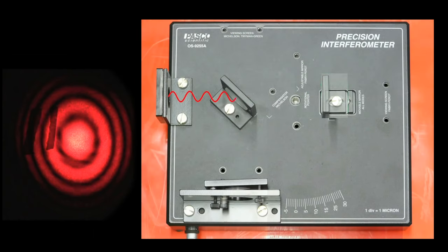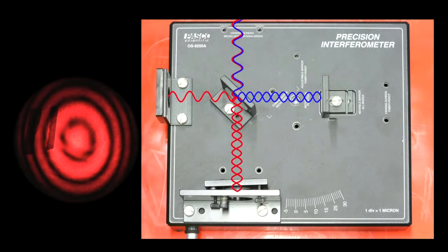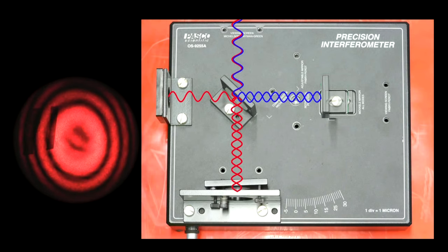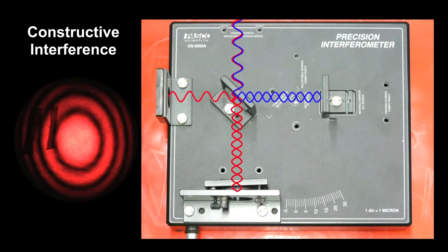As we continue to shorten the wave to the point that it travels one whole wavelength less than the other one, we return to being in sync and get back to maximum constructive interference. The fringe pattern has now shifted one full fringe, producing a pattern just like the one we started with.